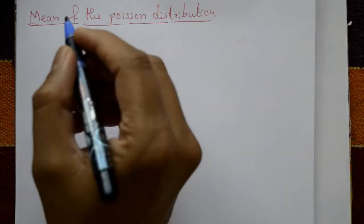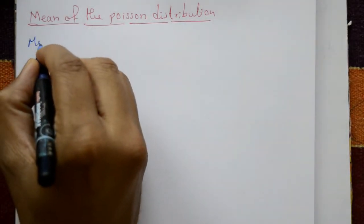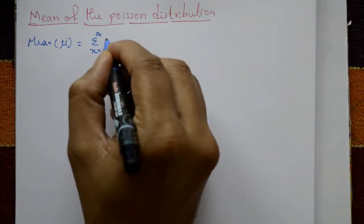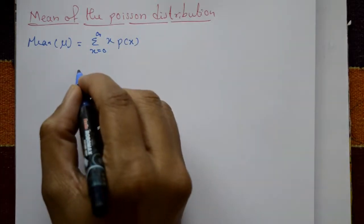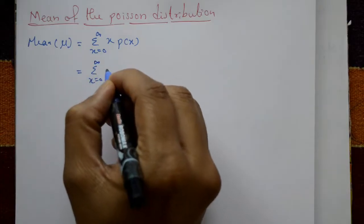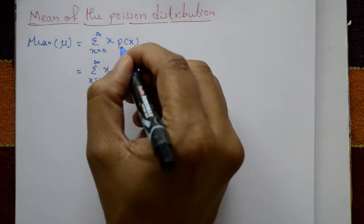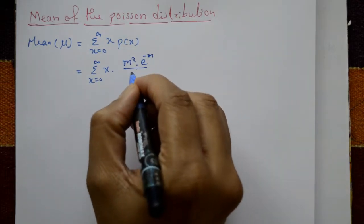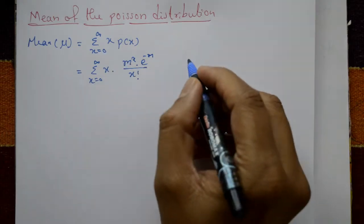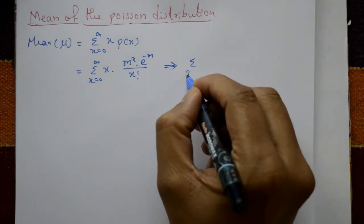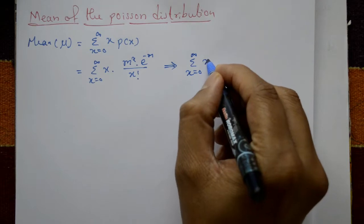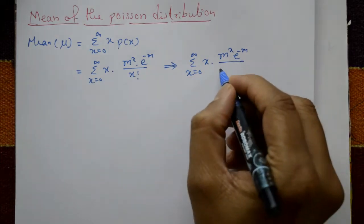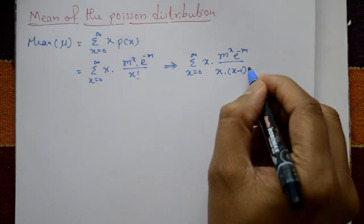Mean of the Poisson distribution: mu is equal to summation from x equals 0 to infinity of x times P(x). The Poisson distribution gives P(x) as m raised to x, times e raised to minus m, divided by x factorial. Canceling x, we get summation from x equals 0 to infinity of x times m raised to x, times e raised to minus m, divided by x factorial, where x factorial equals x times (x minus 1) factorial.